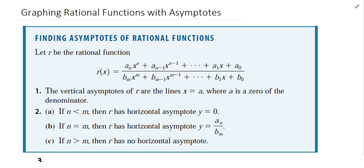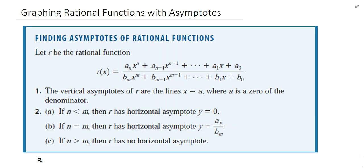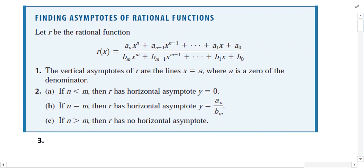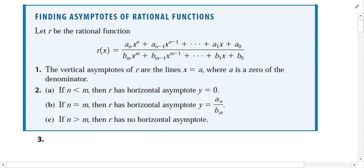In this video I'd like to go over how to graph rational functions with asymptotes. I know a lot of you are working on Part 3 of Unit 1 on Khan Academy, and there's a discussion of asymptotes. So here we've got a chart that summarizes when you will encounter asymptotes on rational functions. There are really just two or three scenarios in which you will encounter them.